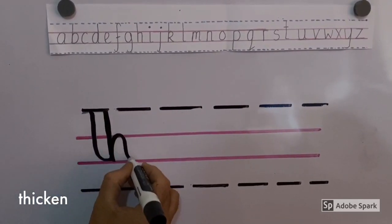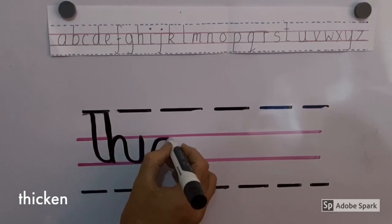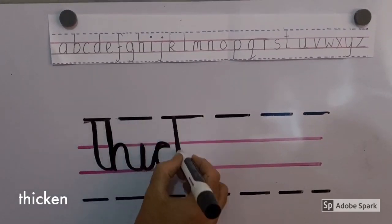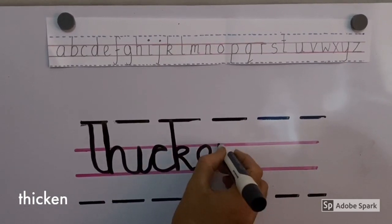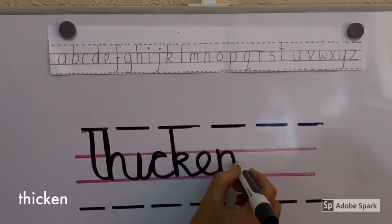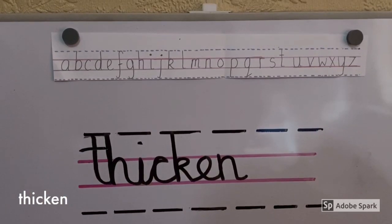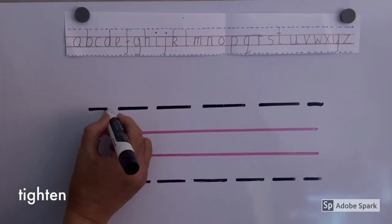Thicken. T, H, I, C, K, E, N. Thicken. Thicken means to make something thick or thicker. Thicken.